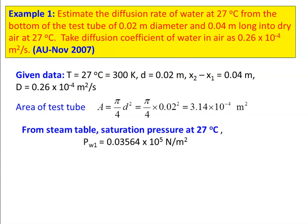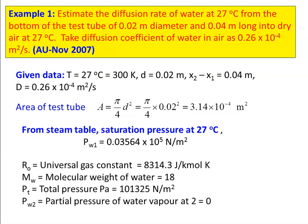From the steam table, the saturation pressure at 27 degrees Celsius, which is PW1, partial pressure of water vapor at the bottom of the test tube, is 0.0354 into 10 power 4.5 Newtons per meter square. The universal gas constant is 8314.3 joules per kilogram mole Kelvin. Molecular weight of water equals 18. Total pressure is 1 atmosphere, which is 101325 Newtons per meter square. We assume partial pressure of water vapor at the top of the test tube equals 0.